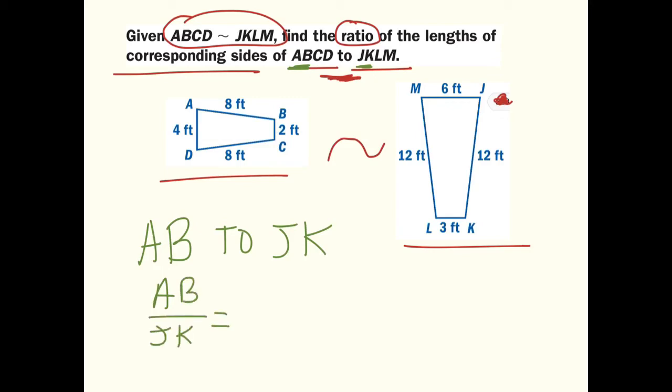We can replace AB, which is right here, which is 8, over JK, which is right here, which is 12. We can reduce the fraction to 2 thirds. So we end up finding out that the ratio from ABCD to JKLM is 2 thirds.